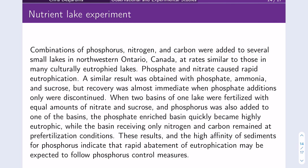Let's talk about an interesting experiment — this one is basically a sample size of one. In this ingenious experiment, the researcher was looking at nutrients in lakes. Combinations of phosphorus, nitrogen, and carbon were added to several small lakes in northwestern Ontario, Canada, at rates similar to those in many culturally eutrophied lakes. Eutrophication is when a lot of nutrients flow into a lake and cause a big growth of algae — algal blooms — which can reduce oxygen in the water so fish die, the water gets toxic, and so on.